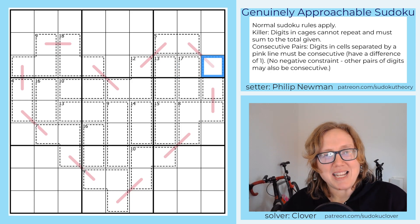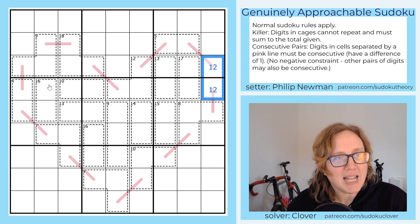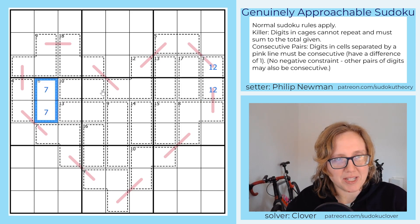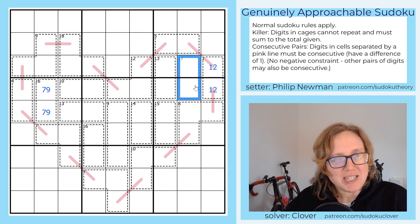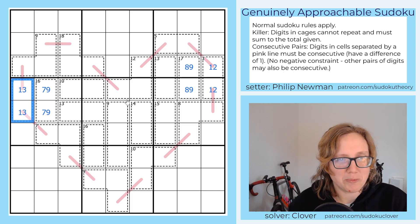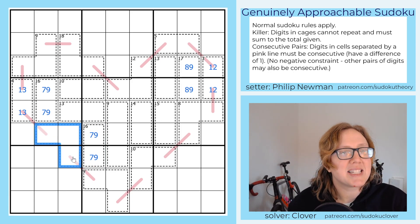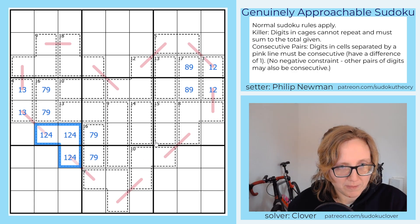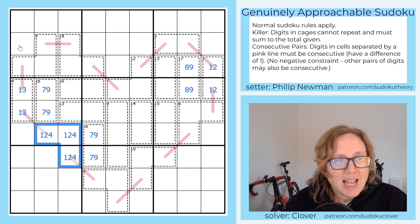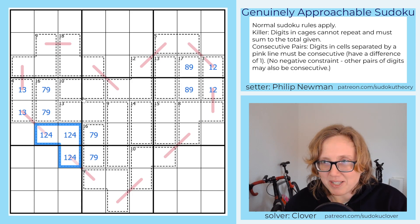So there are some killer cages here that only have one option. The only way to make three in two cells is one and two. The only way to make 16 in two cells is seven and nine. The only way to make 17 in two cells is eight and nine. The only way to make four in two cells is one and three. There's another 16 for us. Seven in three cells is always one, two, and four. And that's all we've got that's literally just restricted right off the bat.